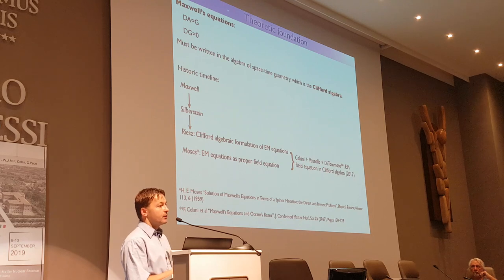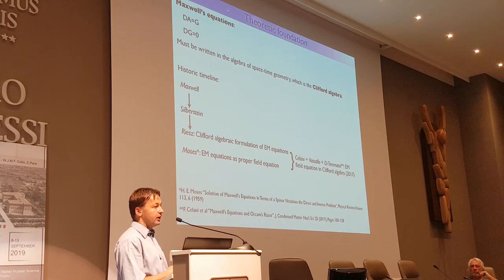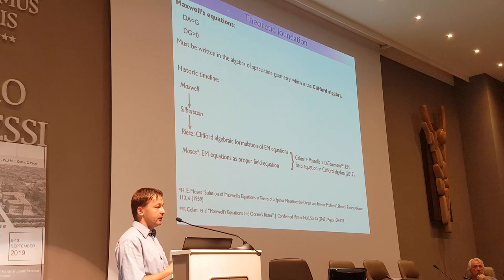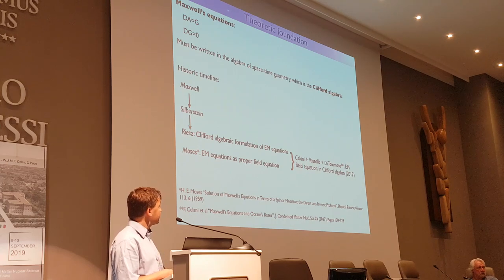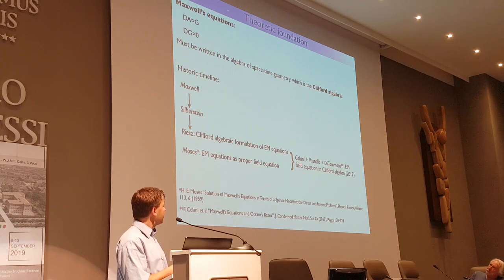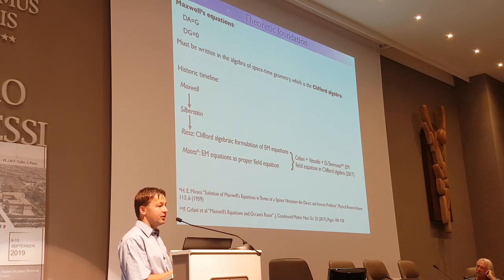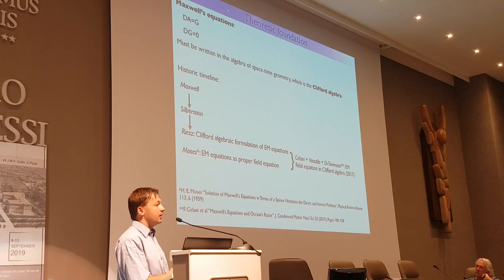The key is that the algebra of the relativistic space-time that we live in is the Clifford algebra, so to write Maxwell's equation properly we have to work in Clifford algebra, and we want to write it as a field equation. When you write it as a field equation, you look for objects that incorporate electric fields, currents and charges. The breakthrough, in my view, was done by Dr. Cervani, Vassalo and Di Tommaso, who published in 2017 the Maxwell equation and Occam's Razor article. I think it's a historic achievement — this is the first time that Maxwell's equation is written as a proper relativistic field equation.